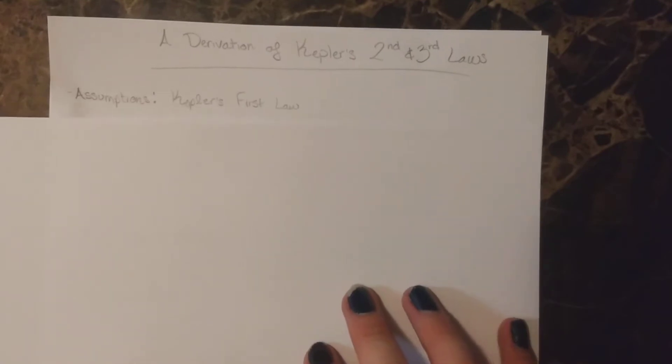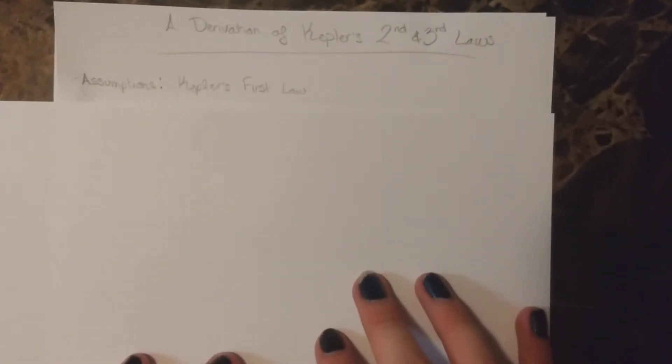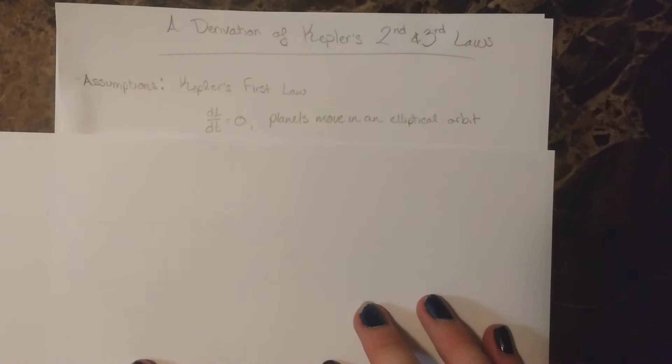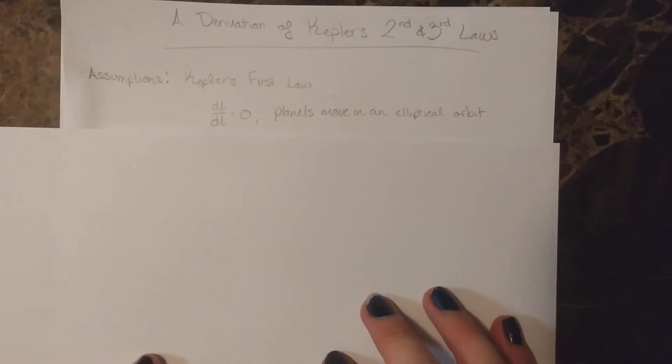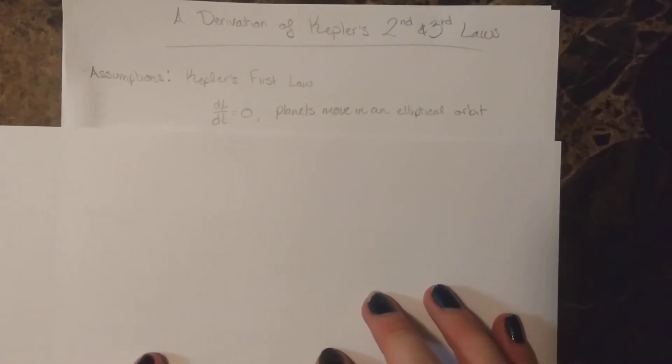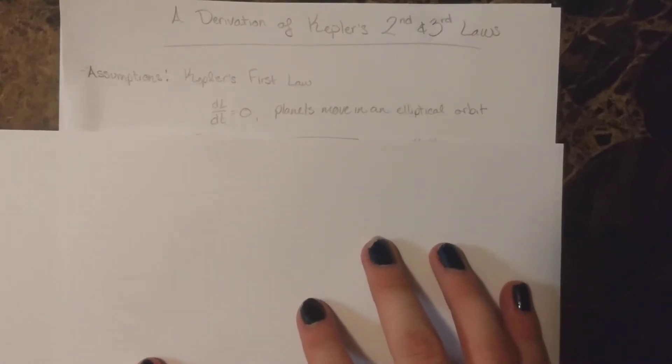Let us begin by making the assumptions of Kepler's first law, that is that planets move in an elliptical orbit. And note that the angular momentum L is a constant, so the change in angular momentum over time is zero.